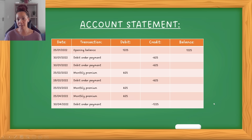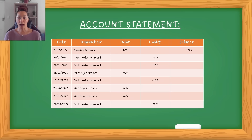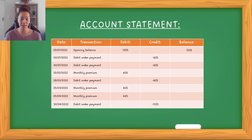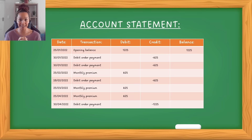Now we're going to look at what a statement for an account would actually look like, and really the big differences between the bank statement setup and the account statement setup. In this case, a person took out a Wi-Fi contract and set up the Wi-Fi at the start of December. The company providing the service said they only need to make their first payment at the end of January — so at the end of January they'll pay for December and January, and each payment would be R625. They get charged the service fee on the 25th, and the customer has a debit order which they pay at the end of the month.